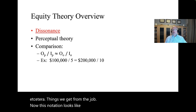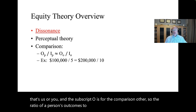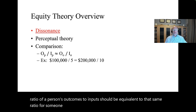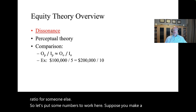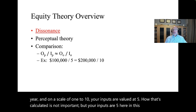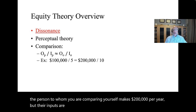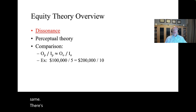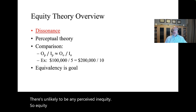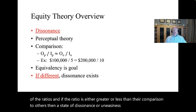The ratio of a person's outcomes to inputs (subscript P for person) should be equivalent to that same ratio for a comparison other (subscript O). For example, suppose you make $100,000 per year and your inputs are valued at 5 on a scale of 1 to 10, while your comparison other makes $200,000 but their inputs are 10 — double yours. The ratios are the same, so there's unlikely to be any perceived inequity. Equity theory posits that most people strive for equivalency of ratios, and if their ratio is either greater than or less than their comparison other's, a state of dissonance exists and must be resolved.